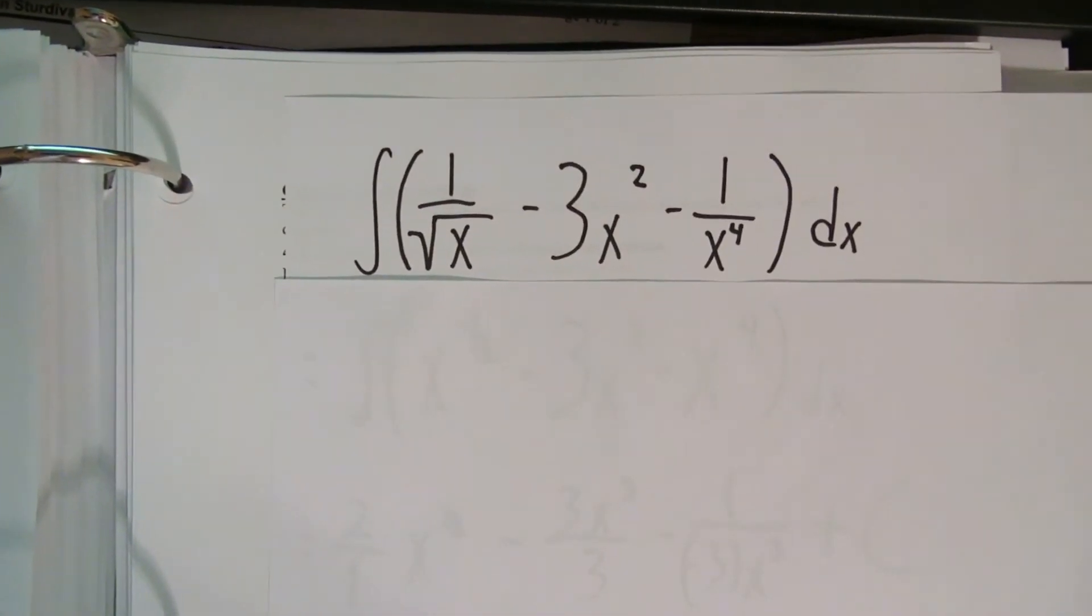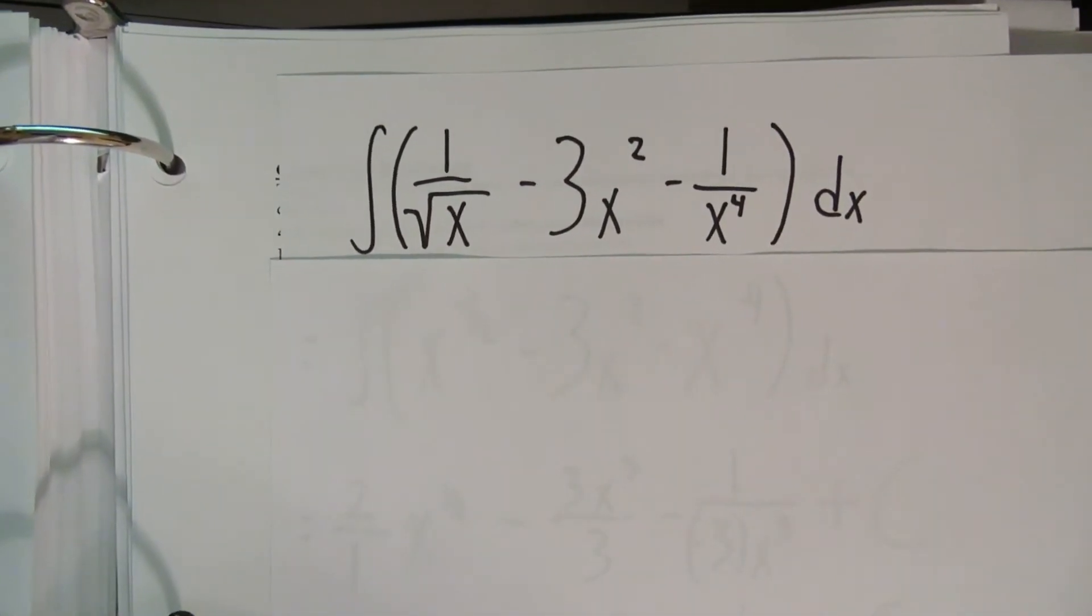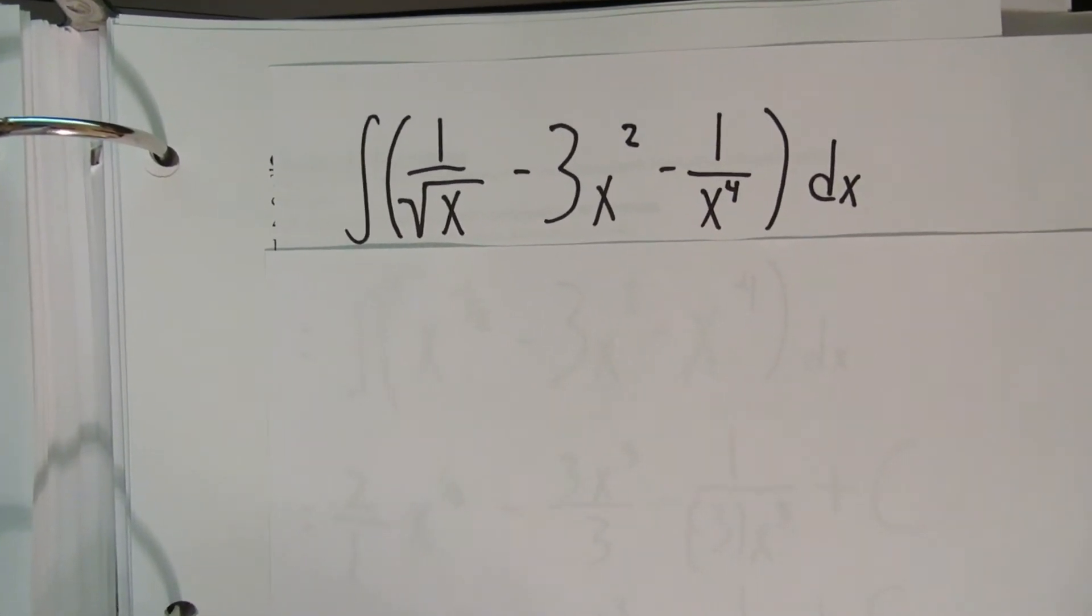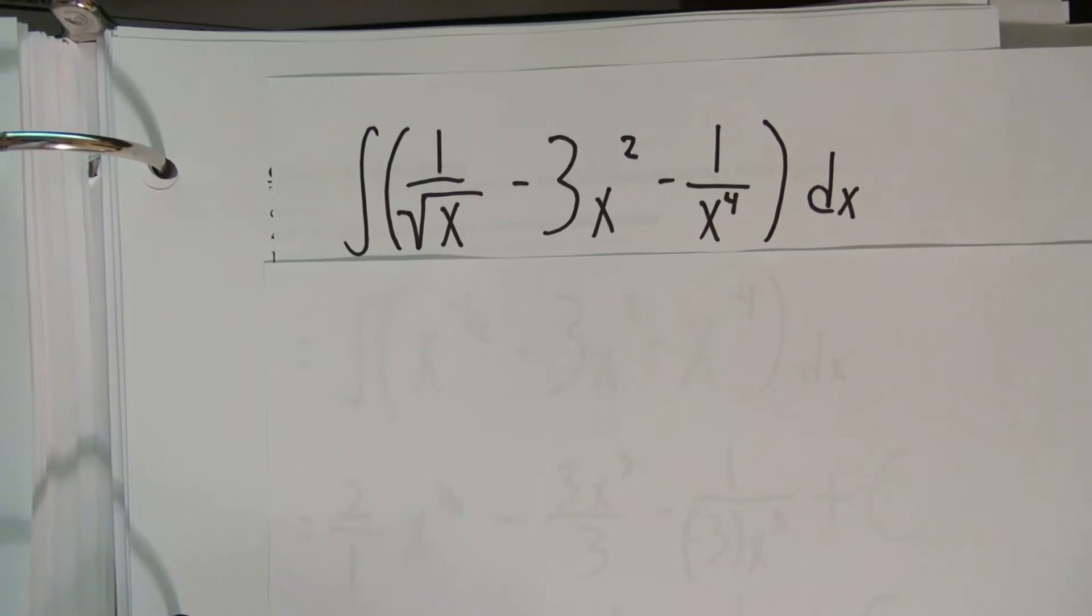For this question, you're asked to find the indefinite integral of 1 over square root of x minus 3x squared minus 1 over x to the fourth.